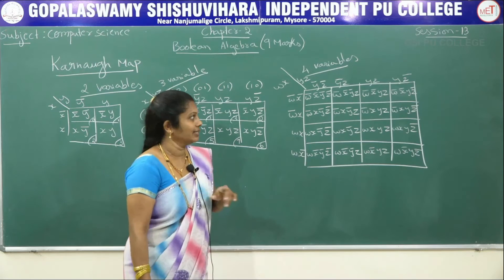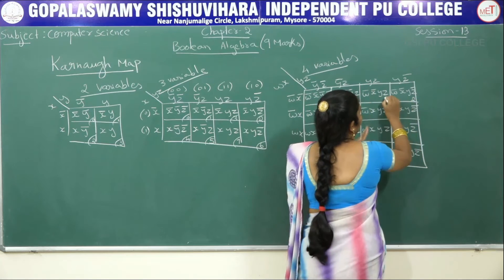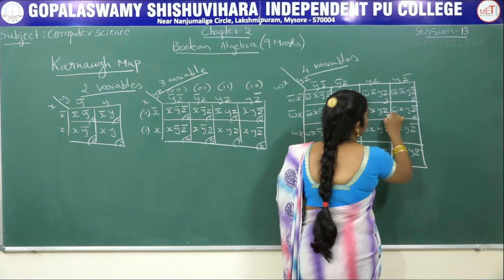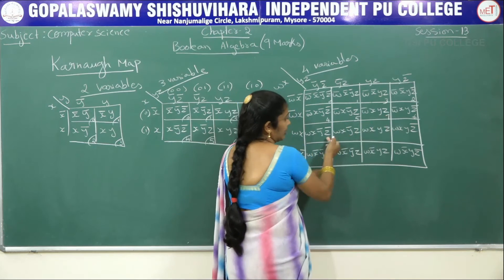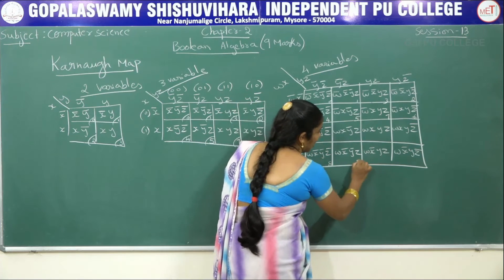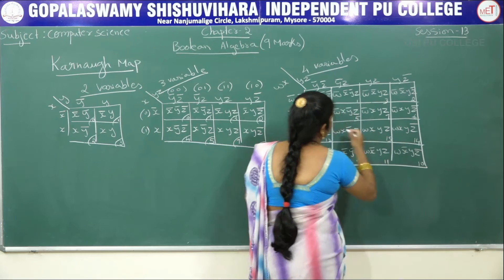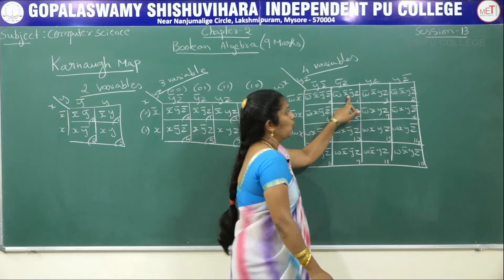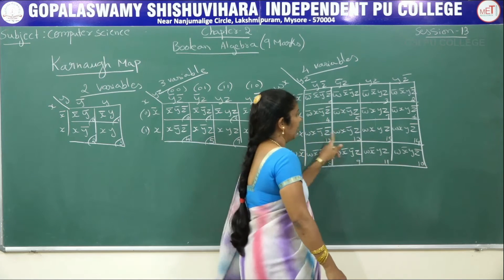For the four-variable K-map designation numbers: starting 0, 1 — third column takes a single jump, so write 2 and 3. Then 4, 5, third column again so 6 and 7. Third row comes, so once again take a single jump — write 8, 9, then don't write 10 here, 10, 11. Then 12, 13, 14, 15. This completes all 16 cell designation numbers for the four-variable K-map.